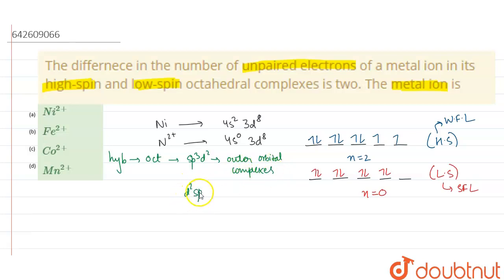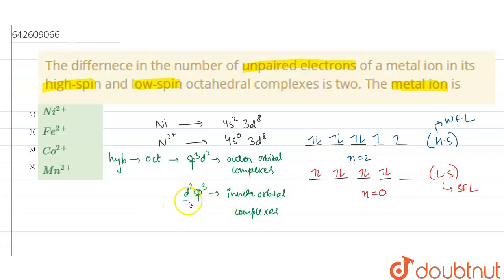The hybridization is sp3d2 for outer orbital complexes and d2sp3 for inner orbital complexes. To make an inner orbital complex we need two vacant d-orbitals in 3d, but in d8 we don't have two vacant d-orbitals. So all complexes will be outer orbital complexes only — it doesn't matter if we have weak or strong field ligands. Therefore option A, nickel 2 plus, is incorrect.